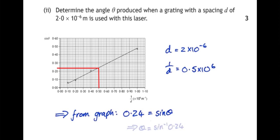So if that's sine theta, then I can find the value for theta, the angle, by inverse signing 0.24, which gives me an angle of 14 degrees.